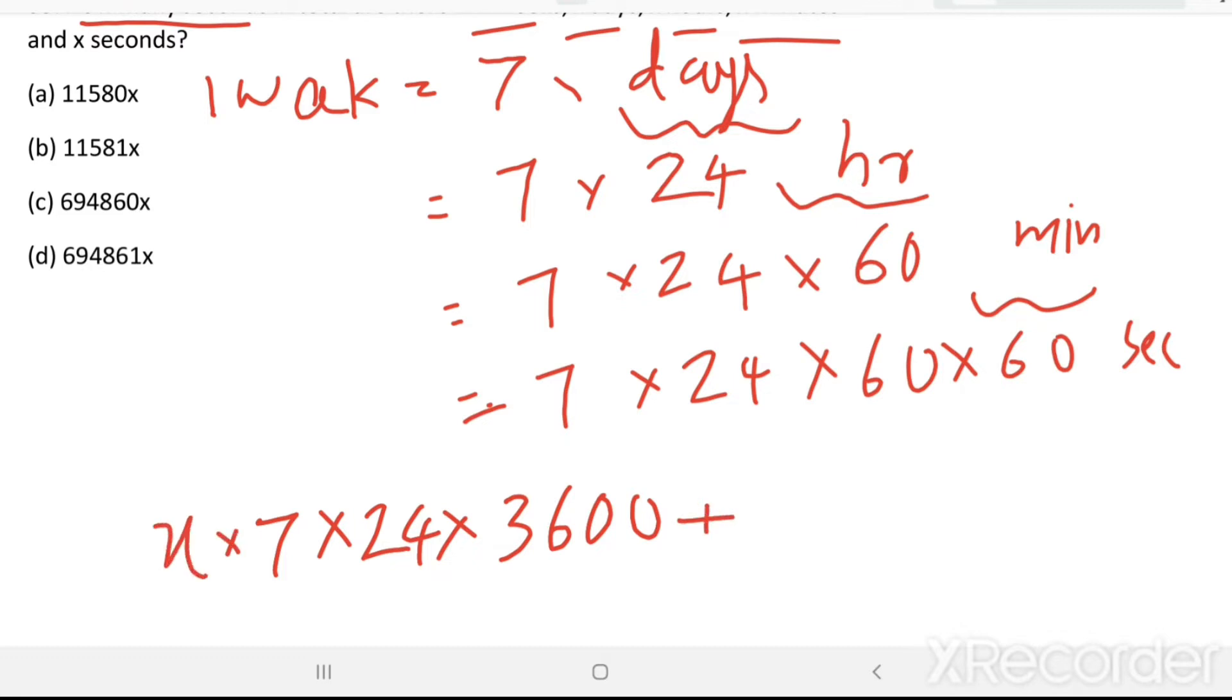Then X days equal to X into 1 day equal to 24 into 60 into 60 seconds. So, X days equal to X into 24 into 3600 seconds.